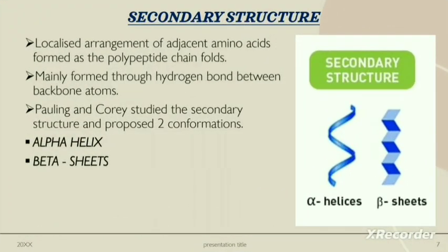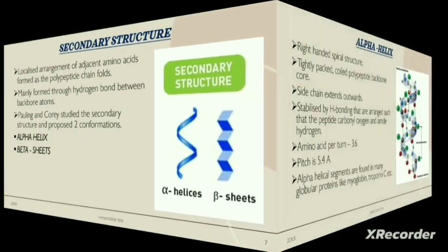Secondary structure: the localized arrangement of adjacent amino acids formed as the polypeptide chain folds. These are mainly formed through hydrogen bonds between the backbone atoms. Pauling and Corey studied the secondary structure and proposed two conformations which include alpha helix and beta sheets.